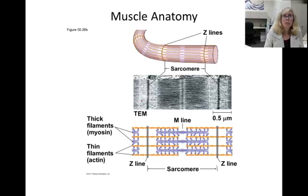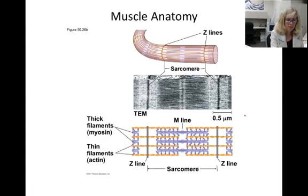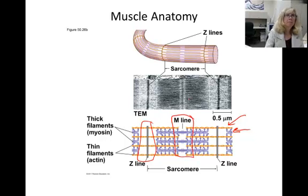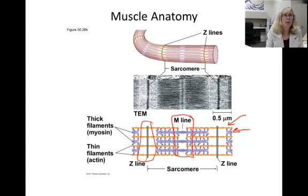This is a close-up of a single muscle cell. We've looked at actin and myosin in an earlier lecture, but here again are the strands of actin and the bundles of myosin. Be sure you know what a Z-line and an M-line are. A single unit of muscle contraction is called a sarcomere.